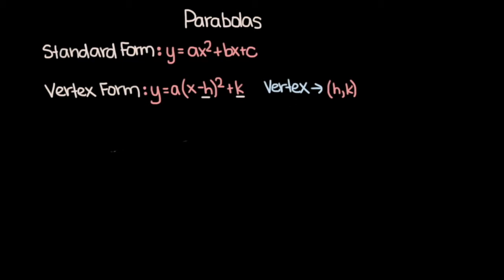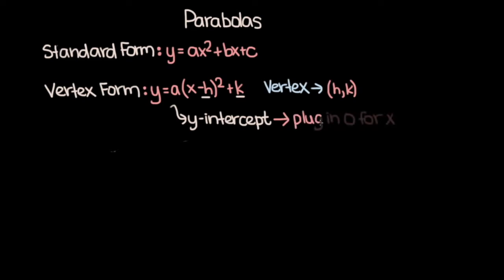The last thing I want to touch on about vertex form in general is how to find the y-intercept. Recall that the y-intercept is where x is equal to 0, so if you want to find the y value for the y-intercept, all you need to do is plug in 0 for x. Now let's talk about how you can convert from standard to vertex form and vice versa.